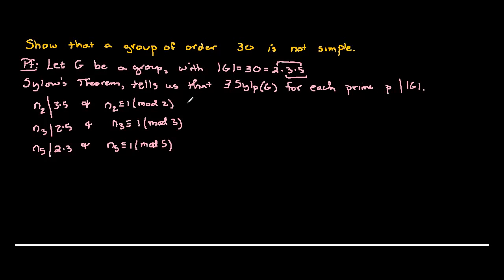Let's extract more information from these constraints. First, notice that n sub 2 must divide 15 and is congruent to 1 mod 2. One strategy is to list all the factors of 15. The factors of 15 are 1, 3, 5, and 15. So n sub 2 must be one of those, but we have this added restriction that n sub 2 is congruent to 1 mod 2.